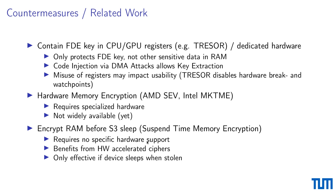Countermeasures as discussed so far in academia include outsourcing the FDE key into CPU or GPU registers. Most prominently, there is the approach Tresor, which was presented at USENIX quite some time ago. However, these approaches only protect the full disk encryption key, not other sensitive data present in RAM. Code injection via DMA attacks is known to circumvent Tresor, and misuse of registers may impact usability. Hardware mitigations like AMD SEV and Intel multi-key total memory encryption require specialized hardware and, to our knowledge, have only been deployed on server hardware and are not available to end-user devices.